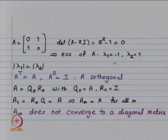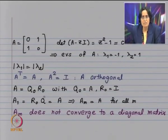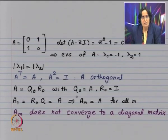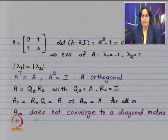If this condition is not satisfied, the iterates in the QR method may not converge. For example, consider the 2 by 2 matrix A = [[0, 1], [1, 0]], whose eigenvalues are −1 and 1. The two eigenvalues have the same modulus. A is symmetric and A² = I, so A is itself an orthogonal matrix. Its QR decomposition can be taken as Q₀ = A and R₀ = I, giving A₁ = R₀ Q₀ = A. All iterates equal the original matrix A, and Aₘ does not converge to a diagonal matrix.